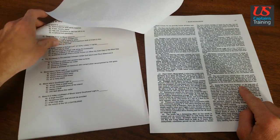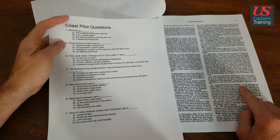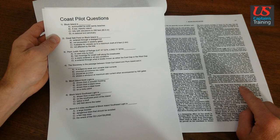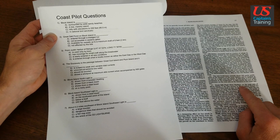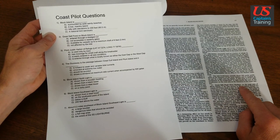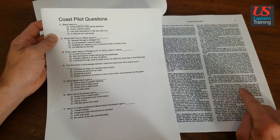Now let's make sure we know what we're looking for: entered through a dredge cut, not accessible in easterly gales, available for vessels up to a maximum draft of eight feet, or not affected by tide. So let's look for that by reading.